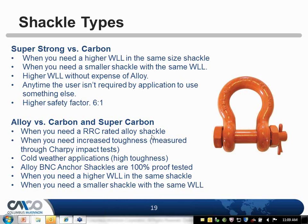Alloy shackles are used when you need an RRC-rated government-rated shackle, which meets certain quality standards required by military specifications. Alloy also offers increased toughness — a combination of strength and ductility — making it the best choice for cold weather applications and shock loading resistance. Alloy bolt nut cotter shackles are 100% proof tested. Choose alloy when you need a smaller shackle with higher working load limits or when the environment demands it.